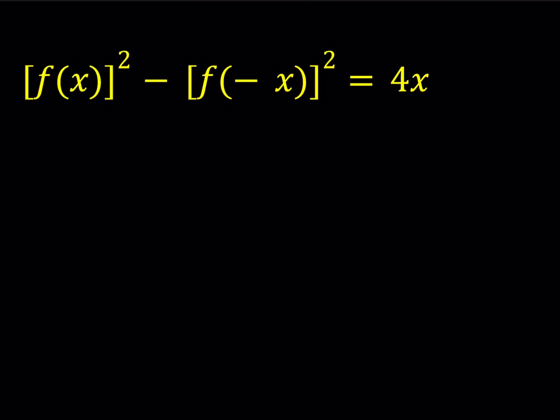Hello everyone. In this video we're going to be solving a functional equation. We have f of x quantity squared minus f of negative x quantity squared equals 4x. And we're going to be solving for f of x.